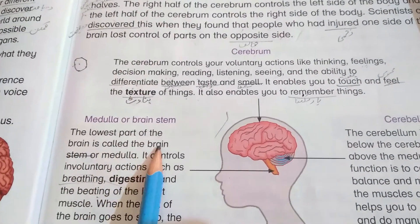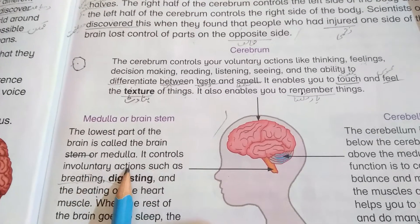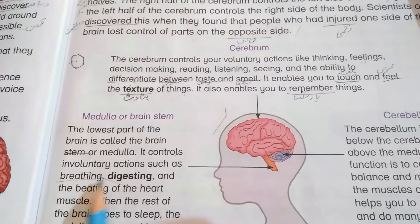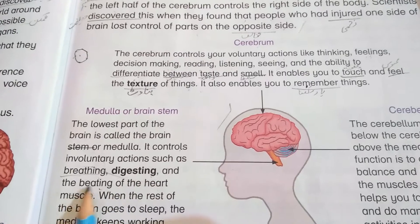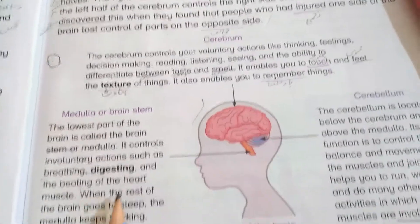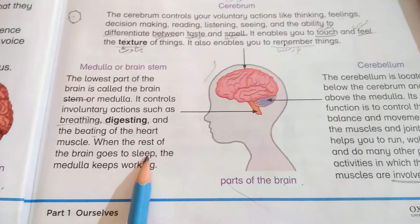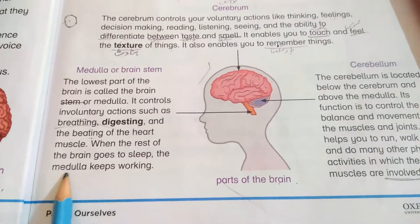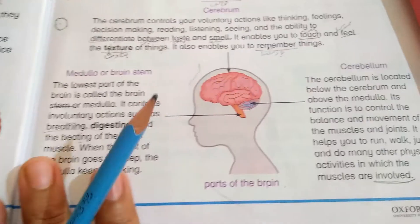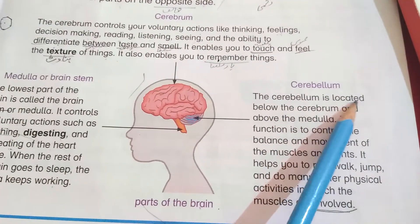The medulla is the lowest part of the brain. It controls involuntary actions such as breathing, digesting, and the beating of the heart. When the rest of the brain goes to sleep, the medulla keeps working.